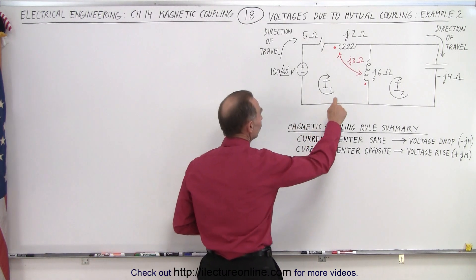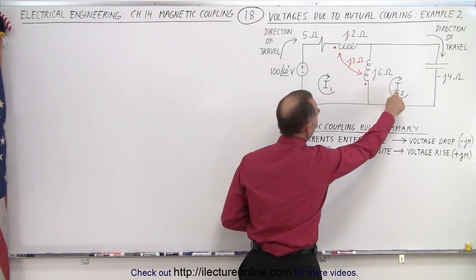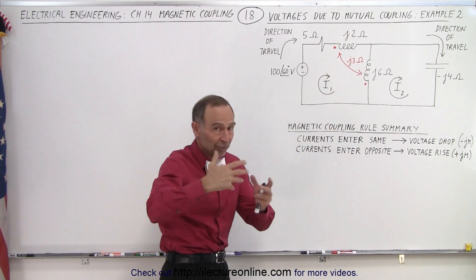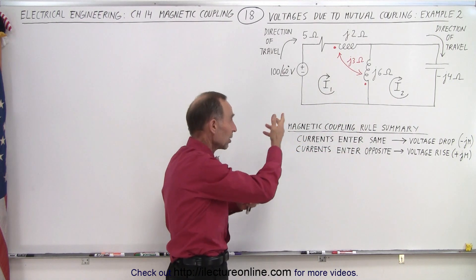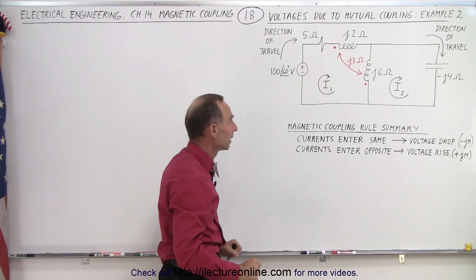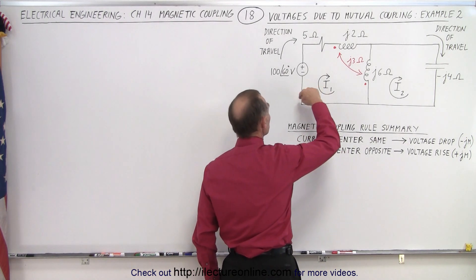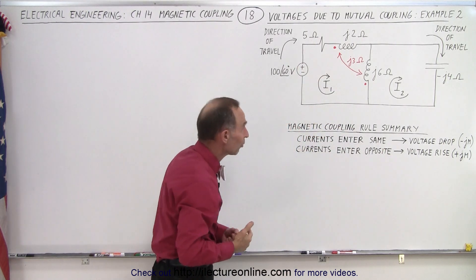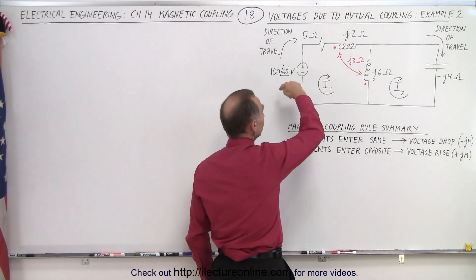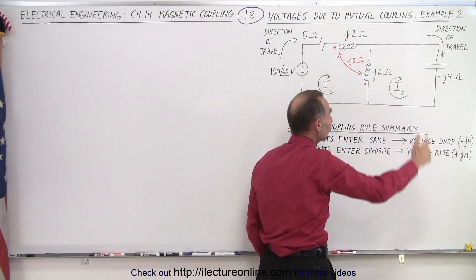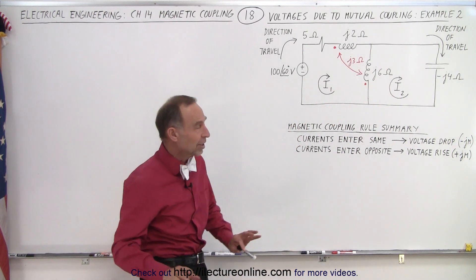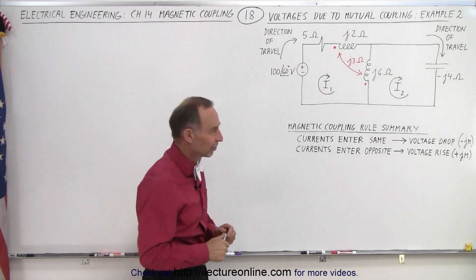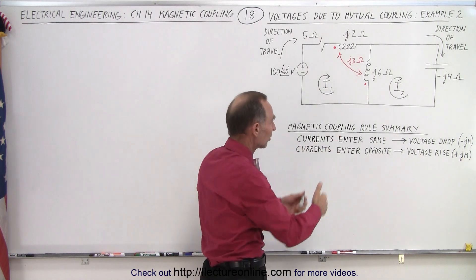We have two loops with an assumed current direction for I1 and I2 in a clockwise direction. You don't have to do it that way — you can have them in opposite directions, one going clockwise and the other counterclockwise. We also need to assume a direction of travel around the loop for KVL to add up all the voltage rises and drops. I like to travel around each loop in a clockwise direction for consistency, but it really doesn't make any difference.